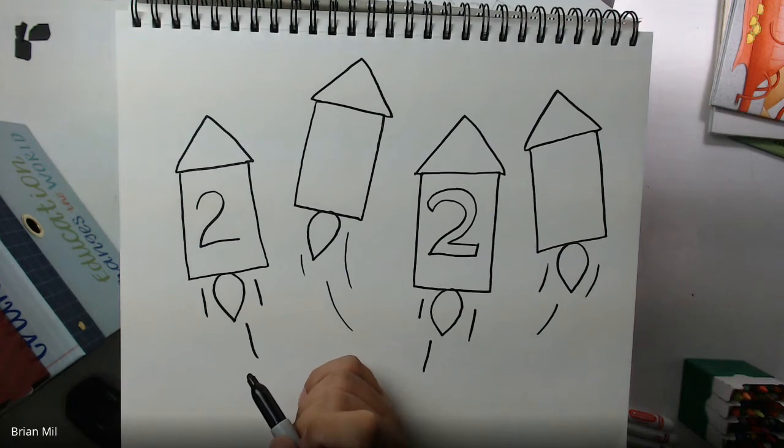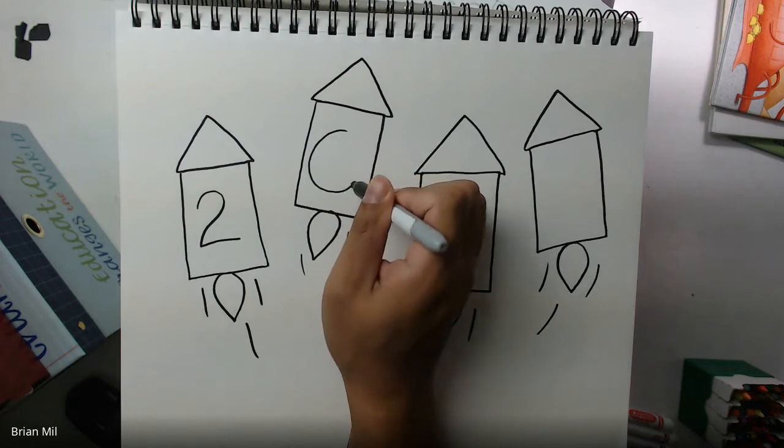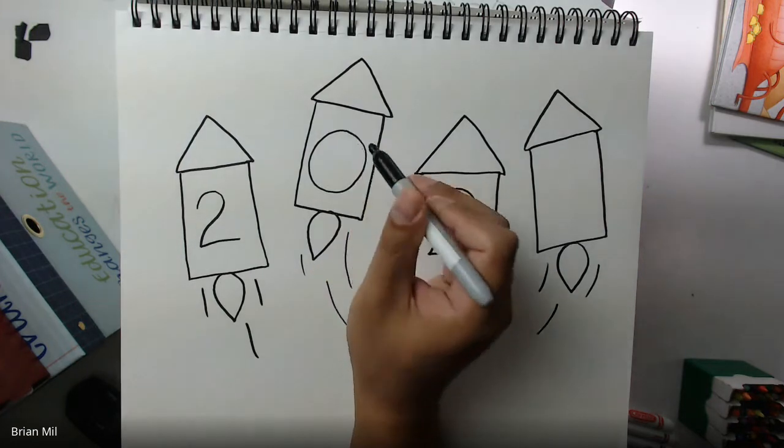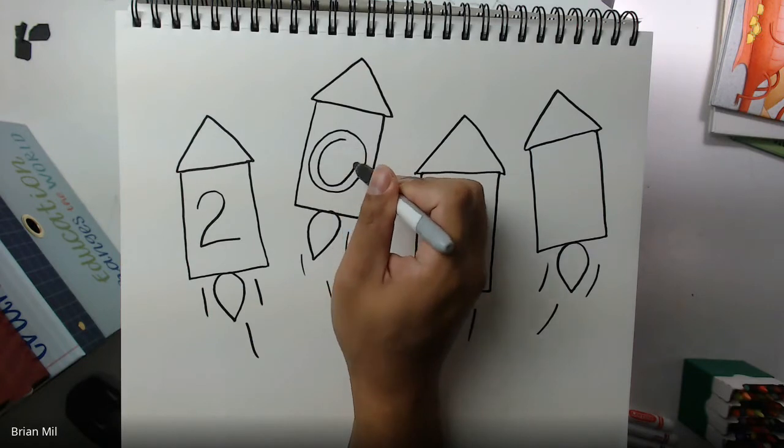Alright, no numbers changed from last year yet. With that said we are going to add a number zero on the second rocket over here. I'm going to add a second oval in the inside of that just like so.